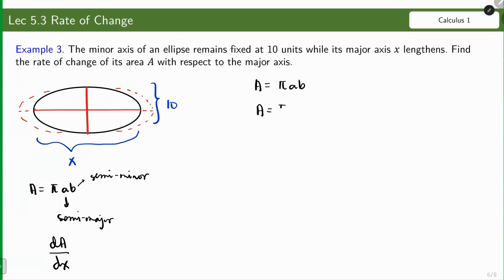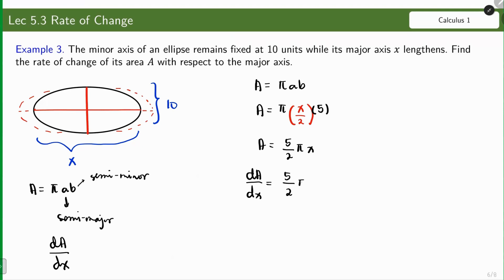For the formula: the semi-major axis is x over 2, and the semi-minor axis is 5 (half of 10). So the area becomes 5 over 2 times pi times x. Getting the derivative of the area with respect to the major axis, the answer is 5 over 2 pi, with units of squared units per unit. For every one unit increase in the major axis, there is a corresponding 5 over 2 pi squared-units increase in the area.